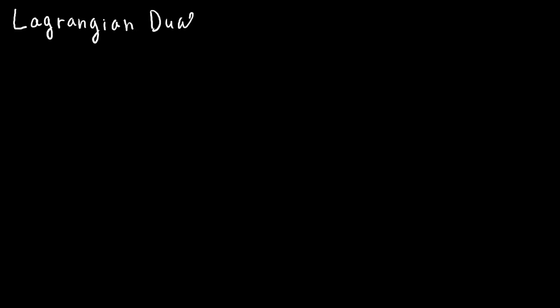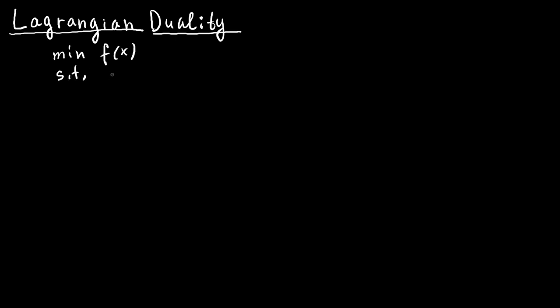In this video we introduce Lagrangian duality and discuss the weak duality theorem. Consider the following optimization problem: we want to minimize f(x) subject to several functional constraints of the form g_i(x) ≤ 0, for i between 1 and p, and a set constraint x belonging to some set X.